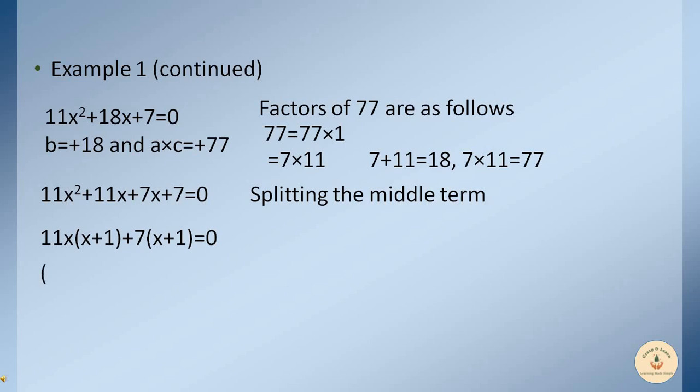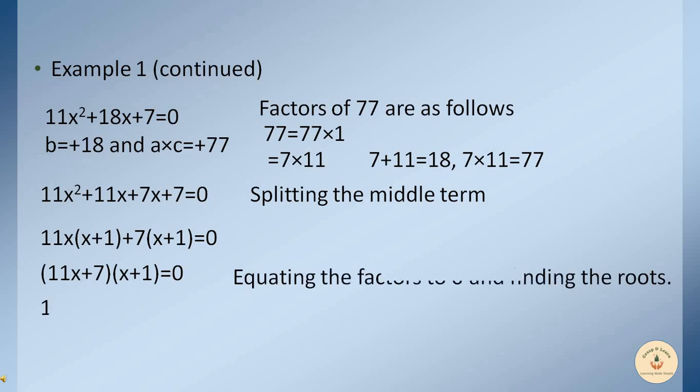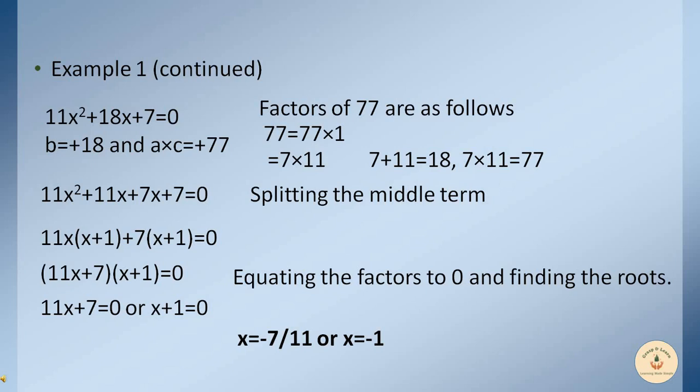We combine to get (11x + 7)(x + 1) = 0. Equating each factor to zero: 11x + 7 = 0 or x + 1 = 0, giving x = −7/11 or x = −1. Both are the roots of the equation and both will satisfy the equation correctly.